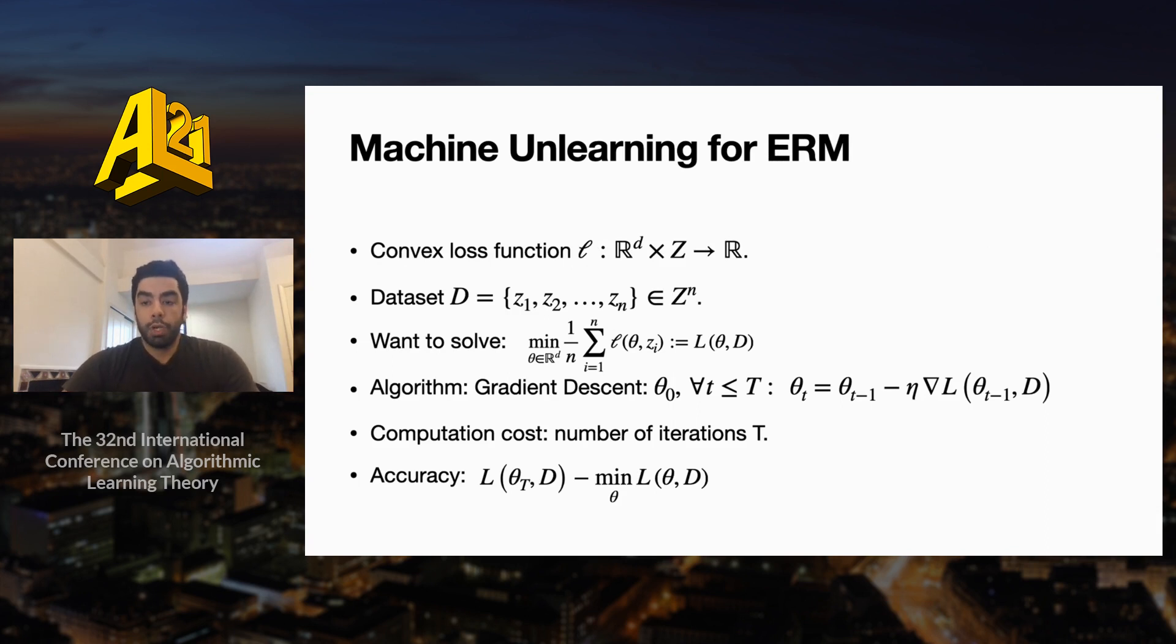Now let's focus on one of the most common learning settings, which is convex empirical risk minimization. In this setting, we have a loss function that takes a d-dimensional vector, which we call a parameter, and a data point in some domain z as inputs and outputs a real valued number, which is the loss of that parameter on that data point. There exists a collection of n data points D, and our goal is to find a parameter that minimizes the empirical loss on the data set.